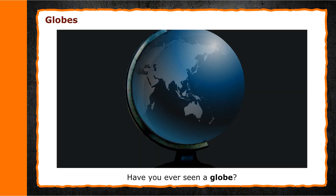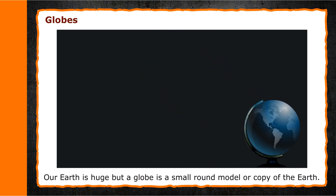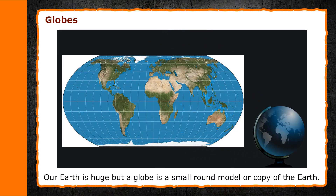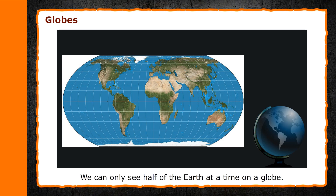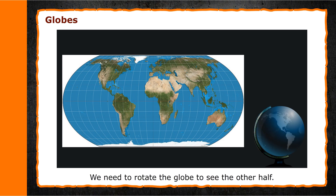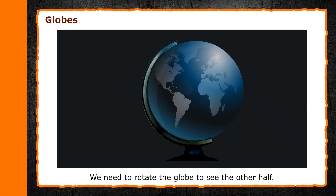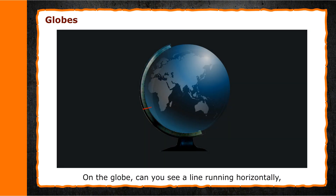Globes. Have you ever seen a globe? Our earth is huge, but a globe is a small round model or copy of the earth. It shows different places on the earth. We can only see half of the earth at a time on a globe, and we need to rotate the globe to see the other half.